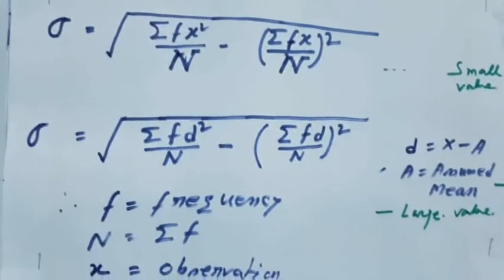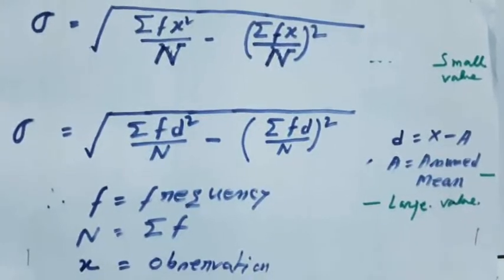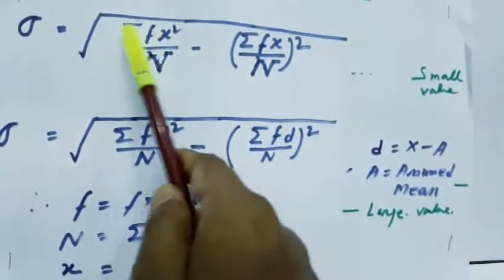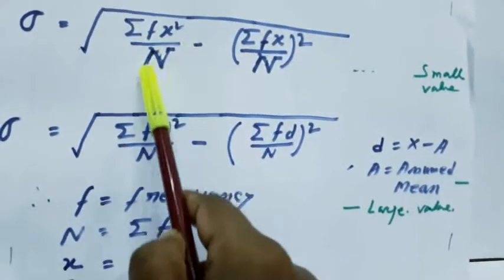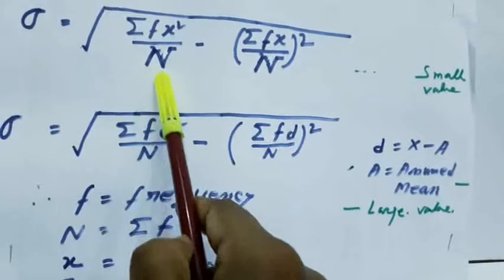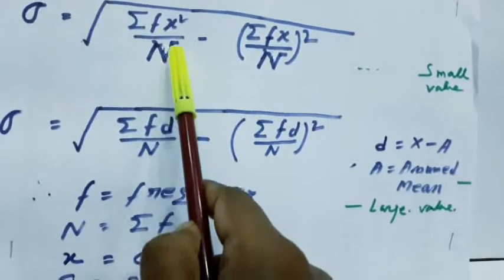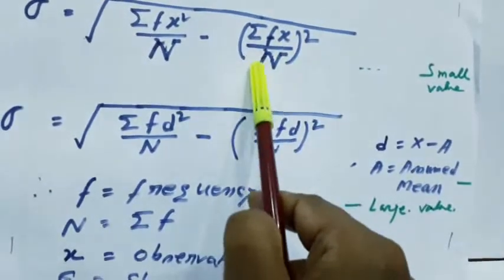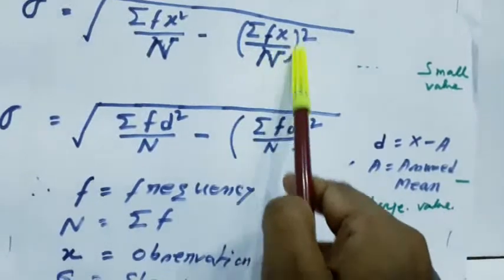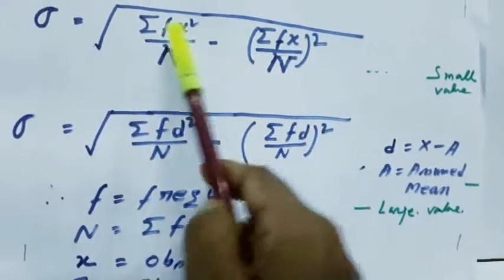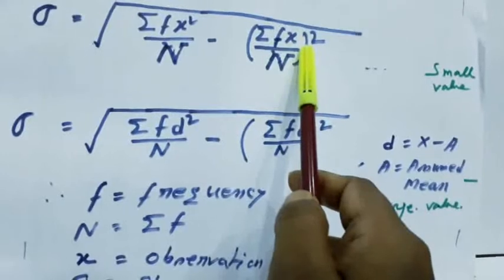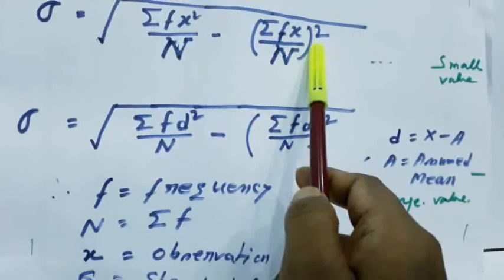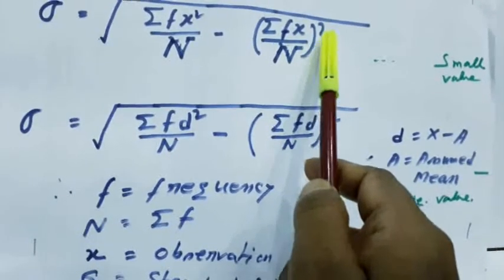This is the formula: root over summation f x square by capital N, where capital N means sum of f, minus summation of f x by capital N, whole square. This formula will be applied when the size of the value or size of the observation is very small.